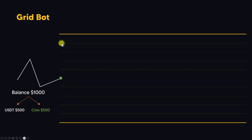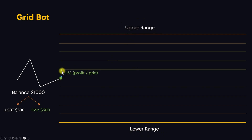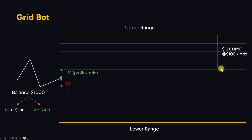Then the bot will create a grid like this. A grid is basically a price level above and below the current price. This grid has an upper range — the maximum level — and a lower range, which is the minimum level. The distance between the current price and the first upper grid is, for example, one percent, meaning one percent profit per grid. Vice versa, if it's below then it's minus one percent.